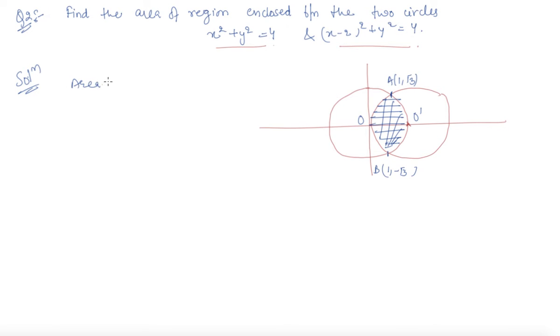So, area of enclosed region O A O dash B A between circles will be two times area of region because there is symmetry. So if I find out the area of the above region, it will be simpler: O A dash O A O dash O.